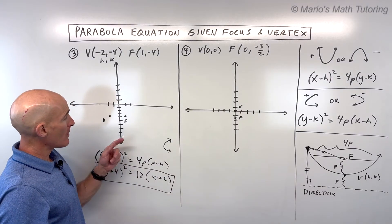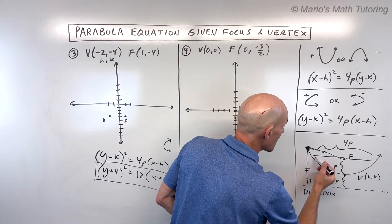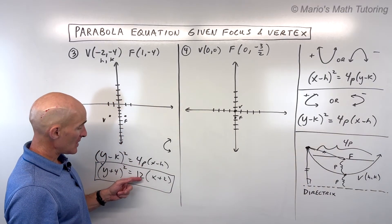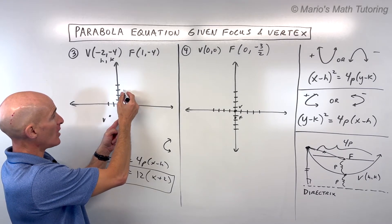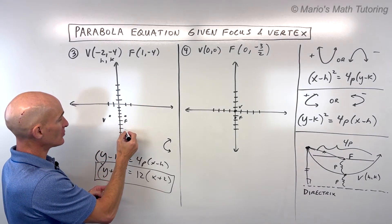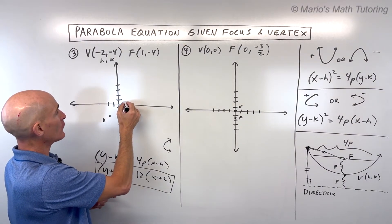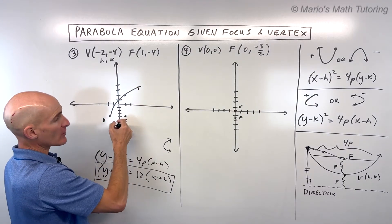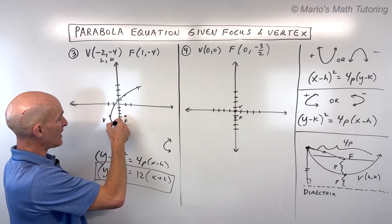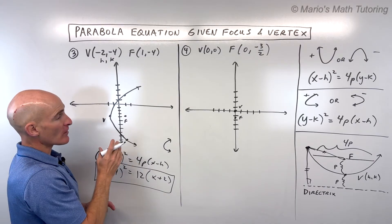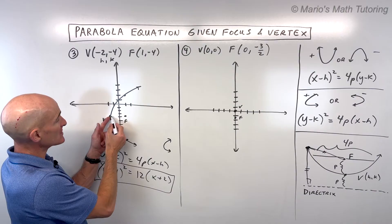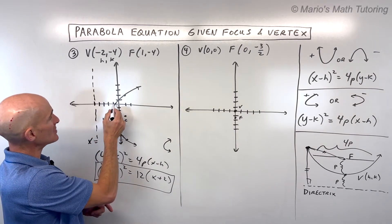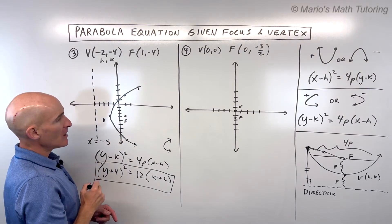For a good sketch, at the level of the focus — this is the latus rectum, a focal chord — it's always 4 times p. We know 4p here is 12. From the focus, I go half of 12, which is up 6 and down 6, giving us two more points. To find the directrix, the distance from the vertex to the focus was 3, so going 3 units in the other direction gives us the directrix at x equals negative 5.